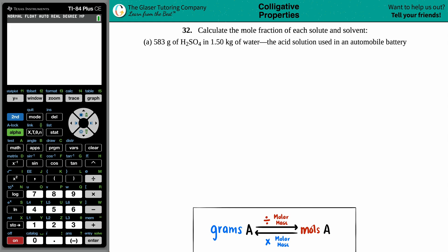Number 32. Calculate the mole fraction of each solute and solvent. We have 583 grams of H2SO4 in 1.50 kilograms of water, the acid solution used in an automobile battery.